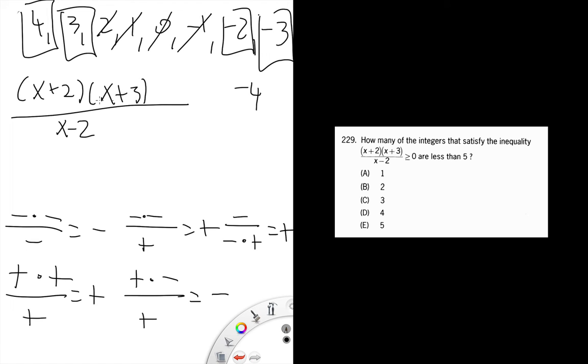Negative four is going to make this negative, this negative, and this negative, so that makes everything negative. Try negative five, that's also going to create negative, negative, negative, and anything more negative will do the same thing. So we end up with four values that work.